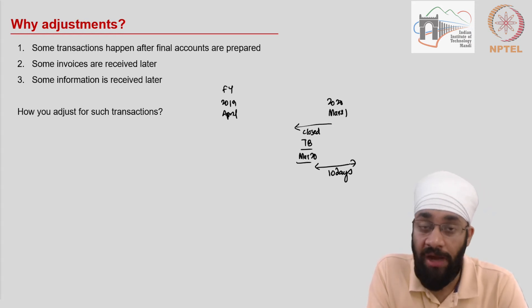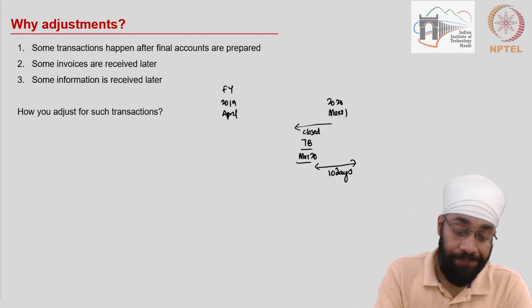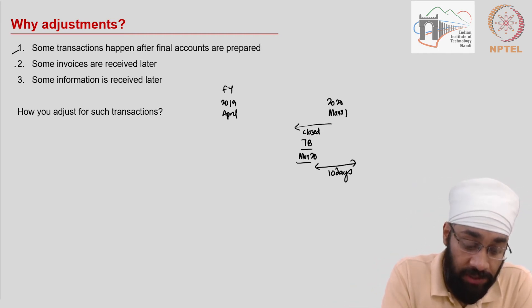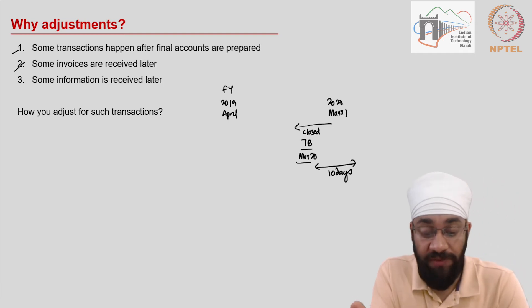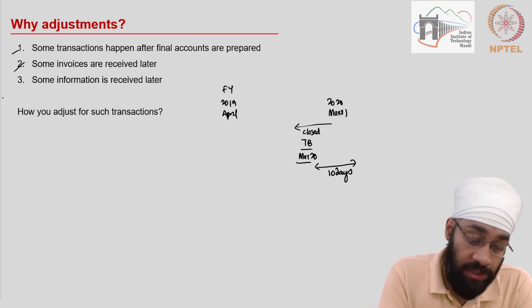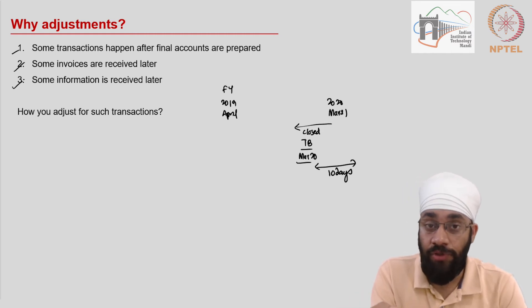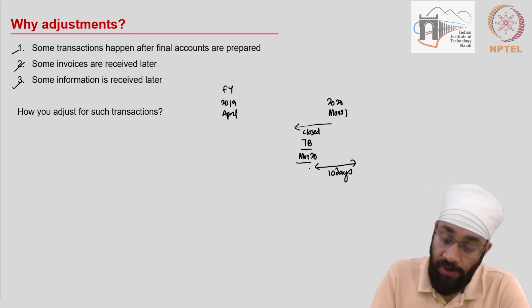Now for these transactions, you have to create an impact in the balance sheet and income statement. Such transactions can be, for example, you receive the invoices later. The transaction happened earlier but you could not write it in the books of accounts. Some information is received later on. For example, stock check happens towards the end of the year and you did not know how many units of stock are unsold because the counting process was going on, or some transactions actually take place during this period.